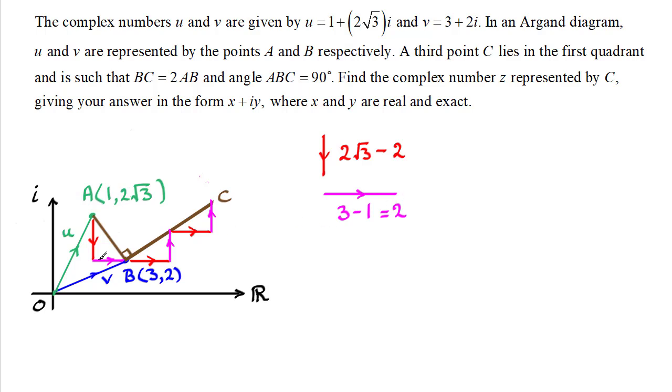So for z, then going from the origin to c, I've color coded this, it's going to be equal to the complex number v, three plus two i. And then we're doing two lots of the red displacement here, which is two root three minus two.